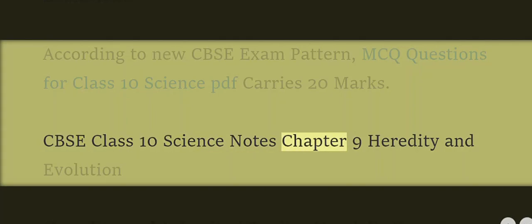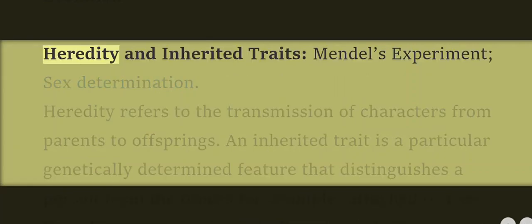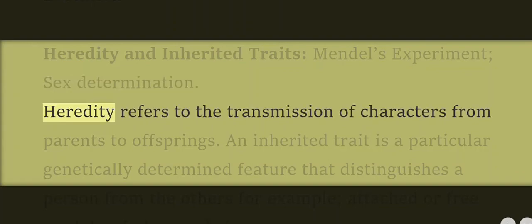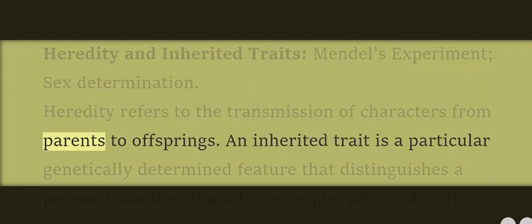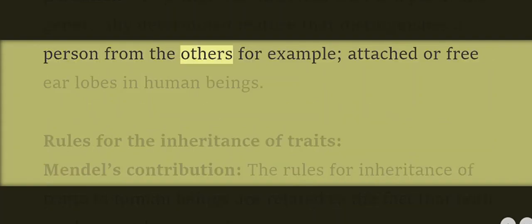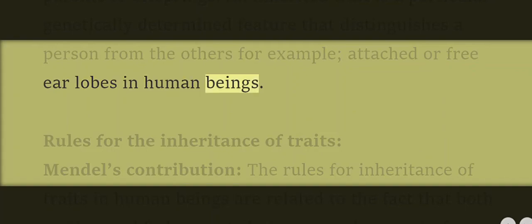Class 10 Science Notes Chapter 9: Heredity and Evolution. Topics include Heredity and Inherited Traits, Mendel's Experiment, and Sex Determination. Heredity refers to the transmission of characters from parents to offspring. An inherited trait is a particular genetically determined feature that distinguishes a person from others, for example, attached or free ear lobes in human beings.